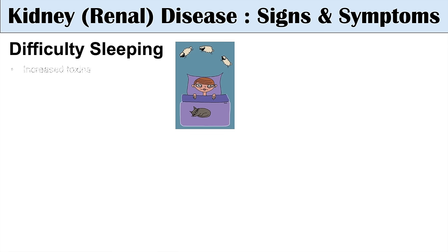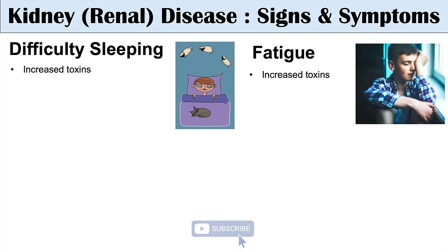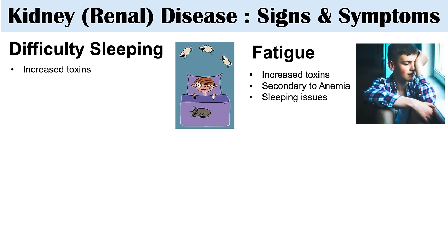Some other signs and symptoms include difficulty sleeping due to increased toxins. Individuals may complain of not being able to get to sleep, having issues during sleep, or being very tired during the day. This leads into fatigue, where patients can be very fatigued with a lot of daytime sleepiness. Because the kidney filters and excretes many toxins, if the kidneys aren't working properly, toxins accumulate leading to fatigue — which can also be secondary to anemia.